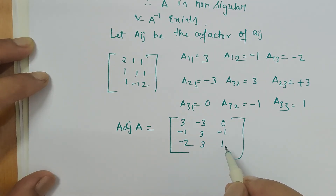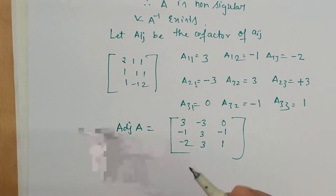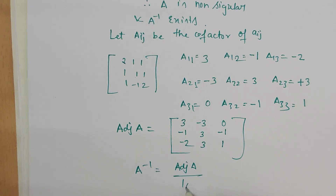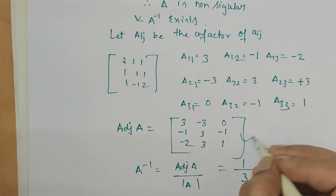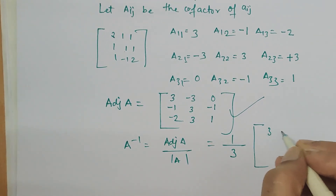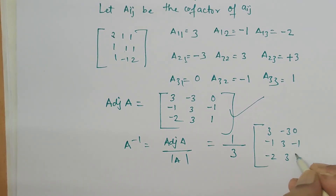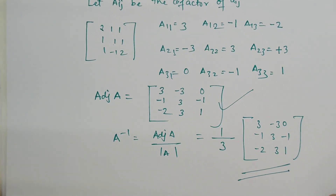We have the formula for finding A inverse: A inverse equals adjoint of A divided by determinant of A. The determinant of A is already calculated as 3. Writing the adjoint beside it, the result is one-third times the matrix: 3, minus 3, 0 / minus 1, 3, minus 1 / minus 2, 3, 1. This is how the inverse of a 3 by 3 matrix is obtained.